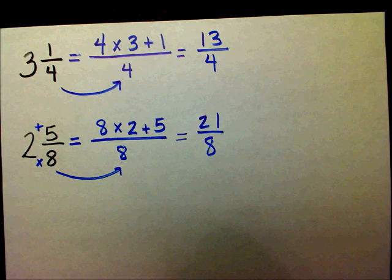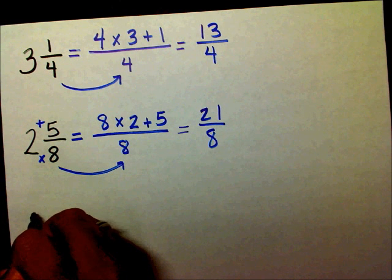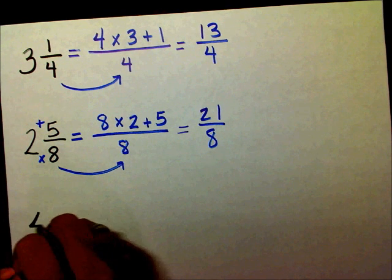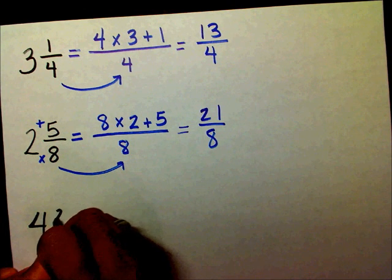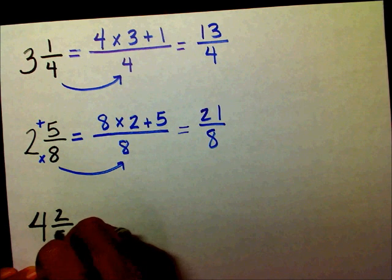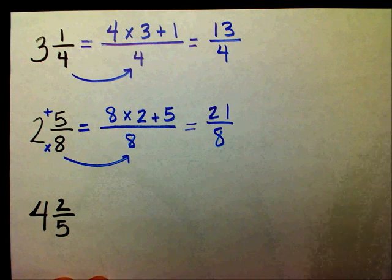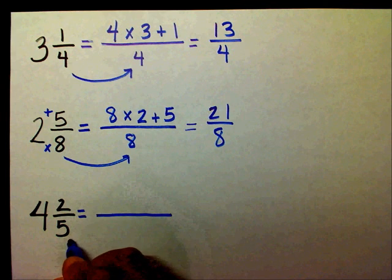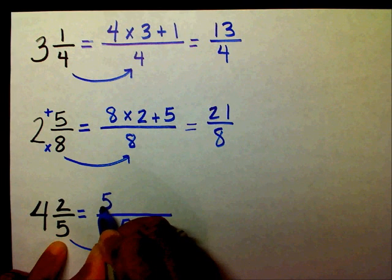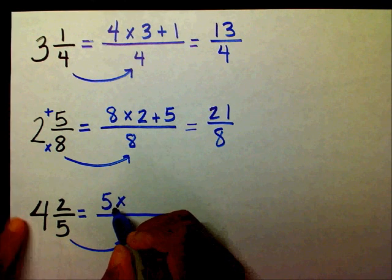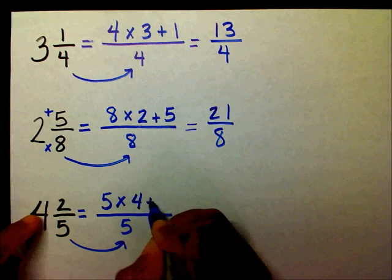All right, let's try another one. Four and two-fifths. So I'm going to draw my line, draw my equal sign, draw my line. I'm going to bring my five over. I'm going to write my denominator times my whole number plus my numerator.